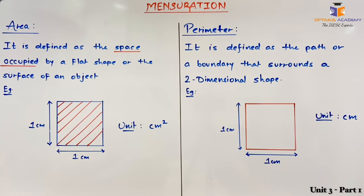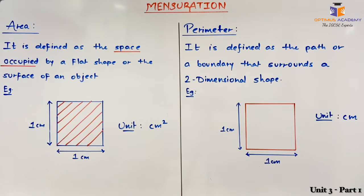Hello dear students. In this video we are going to learn about the topic mensuration. Mensuration is an important topic in terms of mathematics IGCSE paper. In this topic you will be having sums ranging from 10 marks to 20 marks. We are going to learn about area, perimeter, volume, surface area, and conversion of units.